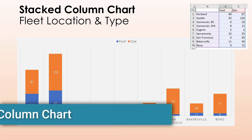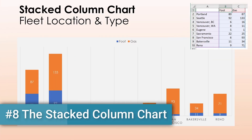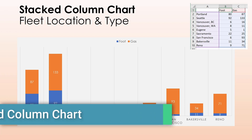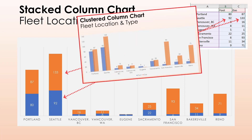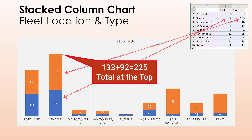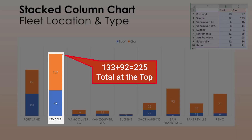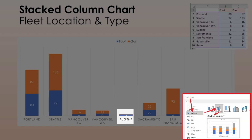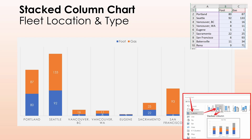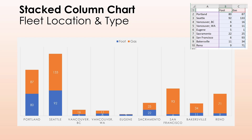The stacked column chart is another variation for multiple series of data — it puts them together on top of each other. Unlike the clustered chart where you can compare the size of each series side-by-side, the stacked column chart emphasizes the total of the series added together. Here, it's instantly recognizable that Seattle has the biggest fleet by city and Eugene has the smallest. As a minor bonus, you get to view how the individual components add up to the total, though that is secondary to the total.